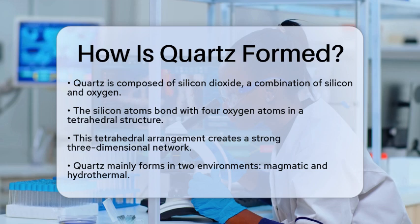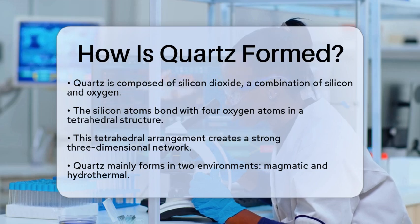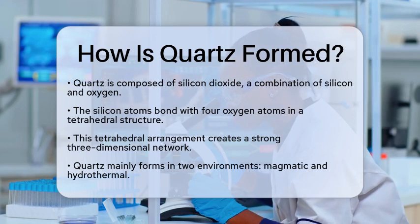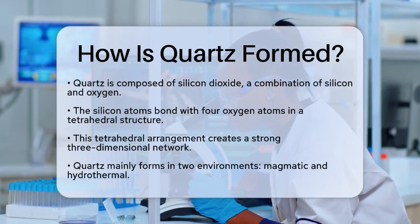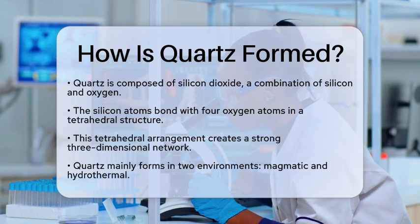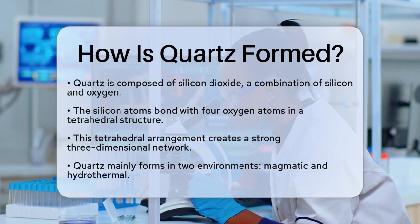Quartz is made up of silicon dioxide, which is a combination of silicon and oxygen. The silicon atoms bond with four oxygen atoms in a special arrangement called a tetrahedral structure. This arrangement is the building block of quartz, creating a strong three-dimensional network.